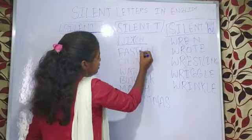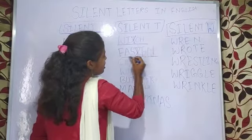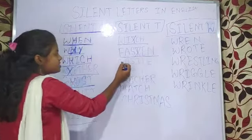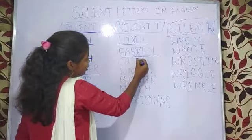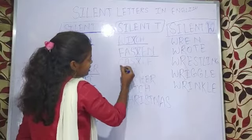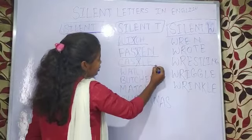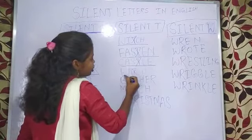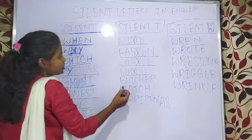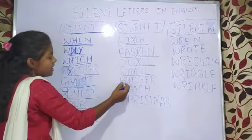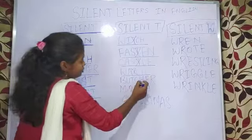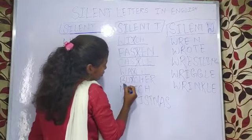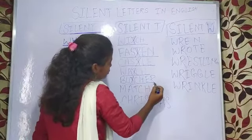Next is 'fashion.' Next is 'castle.' And this is 'watch' — you will read 'watch.' Next is 'butcher' — this is 'butcher.'